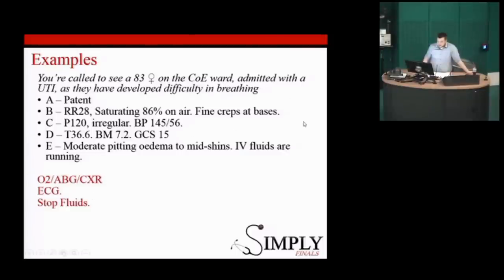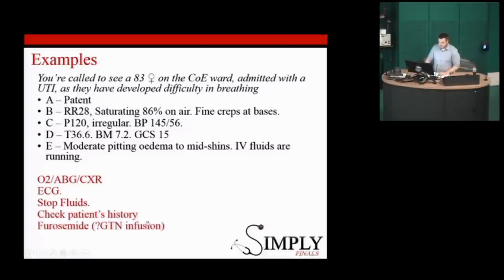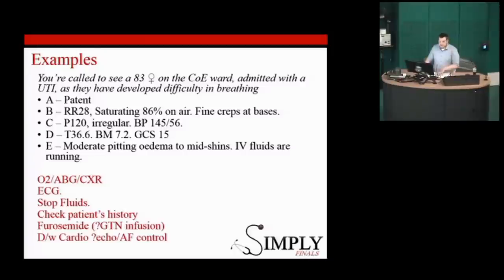Think about getting a chest x-ray, putting oxygen on, and an ABG — though the primary problem here may be the heart rather than the lungs. Stop the fluids. Consider furosemide if you're thinking fluid overload, or a GTN infusion if there's concern about renal function. Discuss with the medical registrar and cardiology: if this is acute onset AF, do we need to cardiovert, give metoprolol, and sort this lady out.